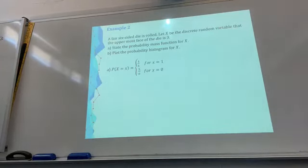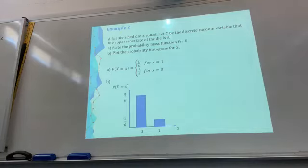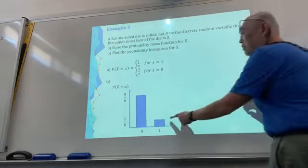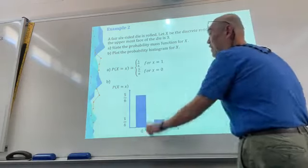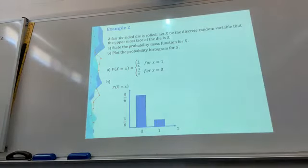Now you can plot the probability histogram for X. It's just something like this. So it's only two, 0 and 1. X axis is only 0 or 1, that's all. The probability of 1 is 1 over 6, the probability of 0 is 5 over 6.